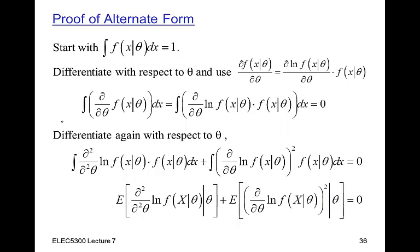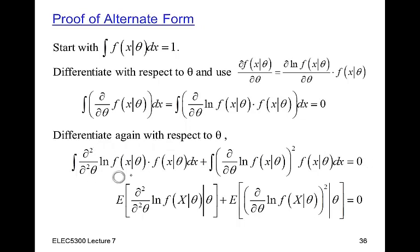Differentiating again using the product rule: the derivative is the double derivative of the log likelihood times f, plus this times the derivative of this. The derivative of the log likelihood term gives the derivative of the log likelihood squared times f of x. These two things added together equal zero. This first integral is the expected value of the second derivative of the log likelihood, and this second integral is the expected value of the first derivative squared — which are the alternative and original forms respectively. That completes the proof.